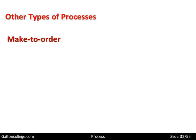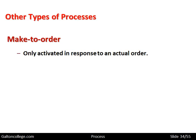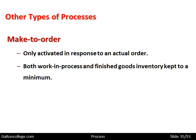Make to order is only activated in response to actual orders — this is the pull system. They only make items that are demanded by customers. Both work in progress and finished goods inventories are kept to a minimum. The customer places an order and gets the product within a speedy time limit, as the organization puts its efforts in immediately to making that order.